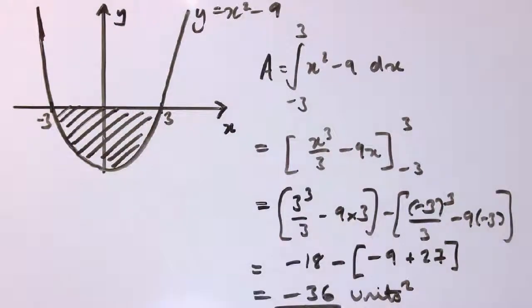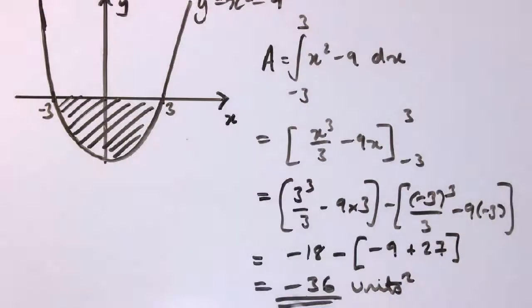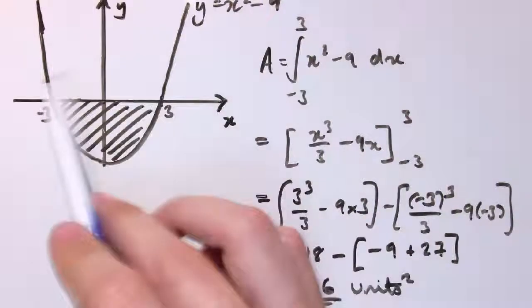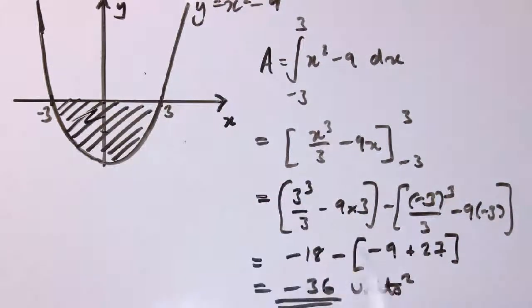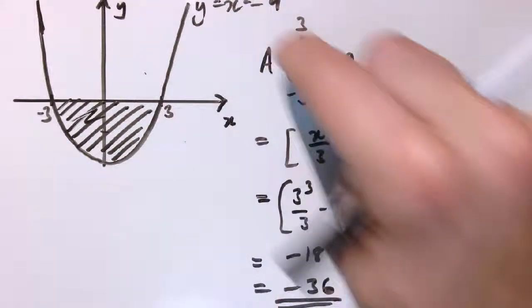And we've ended up with a negative answer here, and we know that an area can't be negative—it's got to be positive. And what is actually happening here is that it's counting the area, but because it's below the axis, it's counting it as negative. So areas above the axis are positive and areas below come out of the integration as negative.